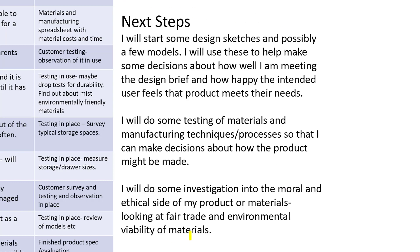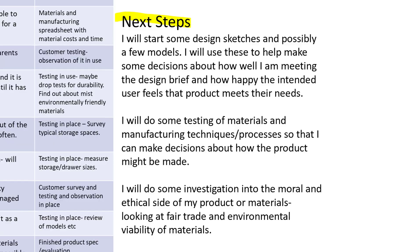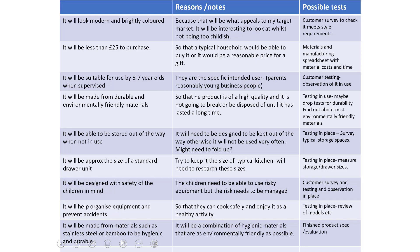Writing the specification: you'll need to create a table in your portfolio of evidence with a list of things your product is going to do, and at the very least you need to have the reasons why that's important. I have a list of criteria, a list of justification, and then I've added how I'm going to test each one. I've broadly based this on ACCESS FM — aesthetics, cost, customer, size, environment, safety, function, materials — slightly rearranged, but broadly there.